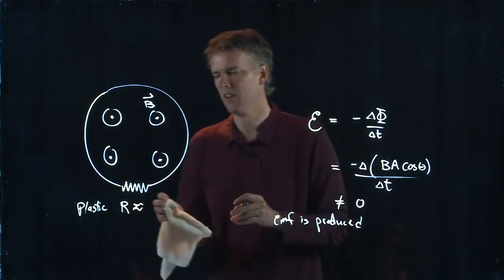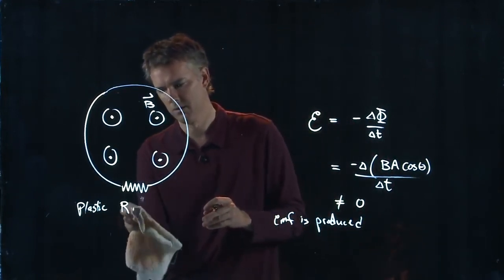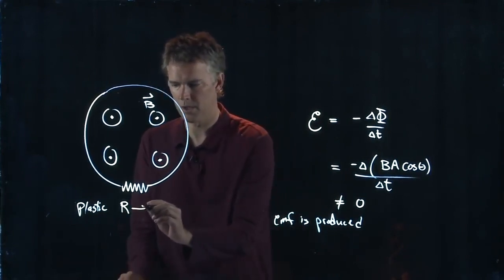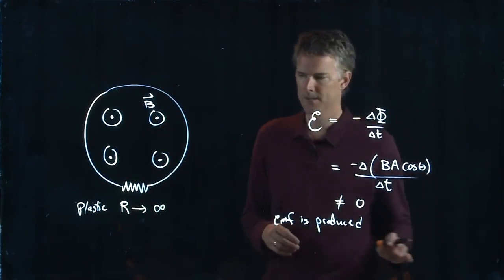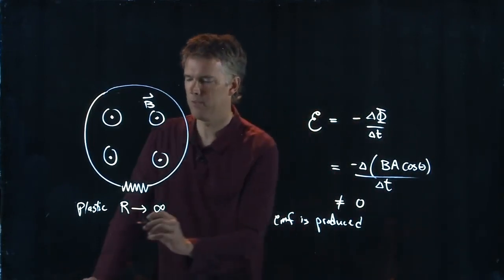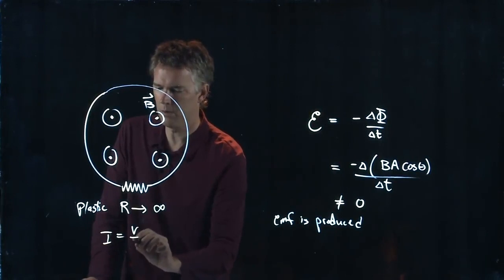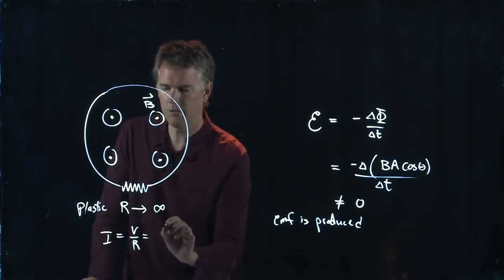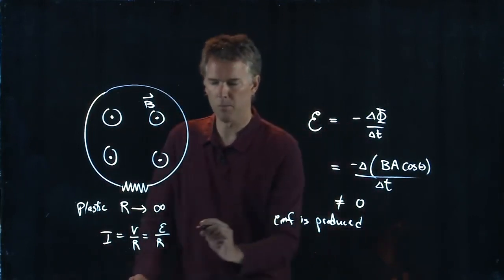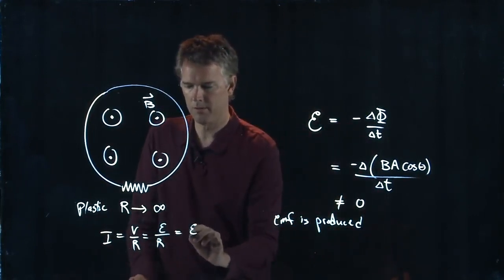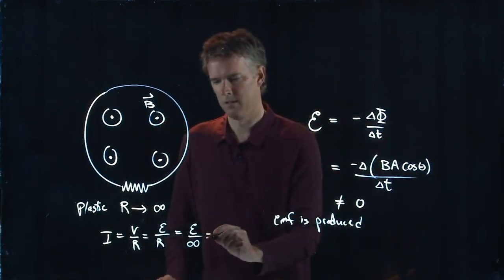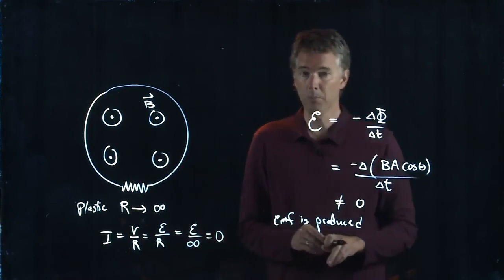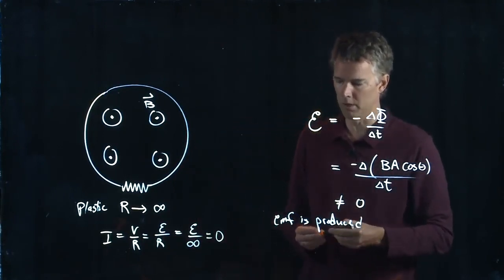Or we should say approaching. It's approaching infinity. Right? What is the current that develops? I is equal to V over R, which is EMF epsilon over R. The epsilon was non-zero of course. But the resistance is basically infinite. So you do produce an EMF but you produce no current.